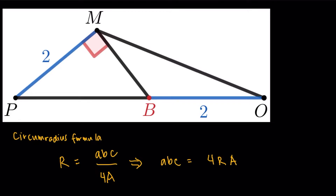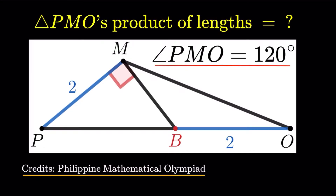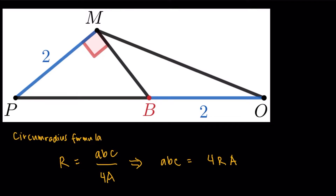In the given, we have some lengths, a right angle, and angle PMO equal to 120 degrees. That really gave me a sign that trigonometry is going to be involved because of the special angles. I listed down some of the angles: angle PMO is 120 degrees, the right angle makes this 30 degrees, and I decided to make this angle X. Then I filled up the rest of the angles in terms of X.